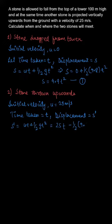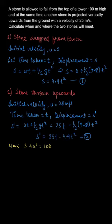So s' can be written as ut plus half gt squared. But since it is upward motion, the value of g would be minus 9.8. So, the equation would be 25t minus half into 9.8 into t squared. Therefore, s' can be written as 25t minus 4.9t squared. Let us assume that to be equation number two.